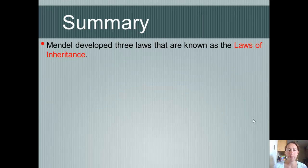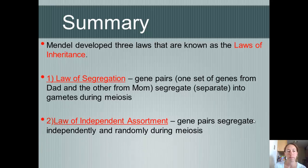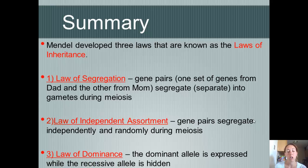In summary, Mendel developed three laws known as the Laws of Inheritance. Law one is the Law of Segregation: gene pairs segregate into gametes during meiosis. Law two is the Law of Independent Assortment: gene pairs segregate independently and randomly during meiosis. Law three is the Law of Dominance: the dominant allele is expressed while the recessive allele is hidden.